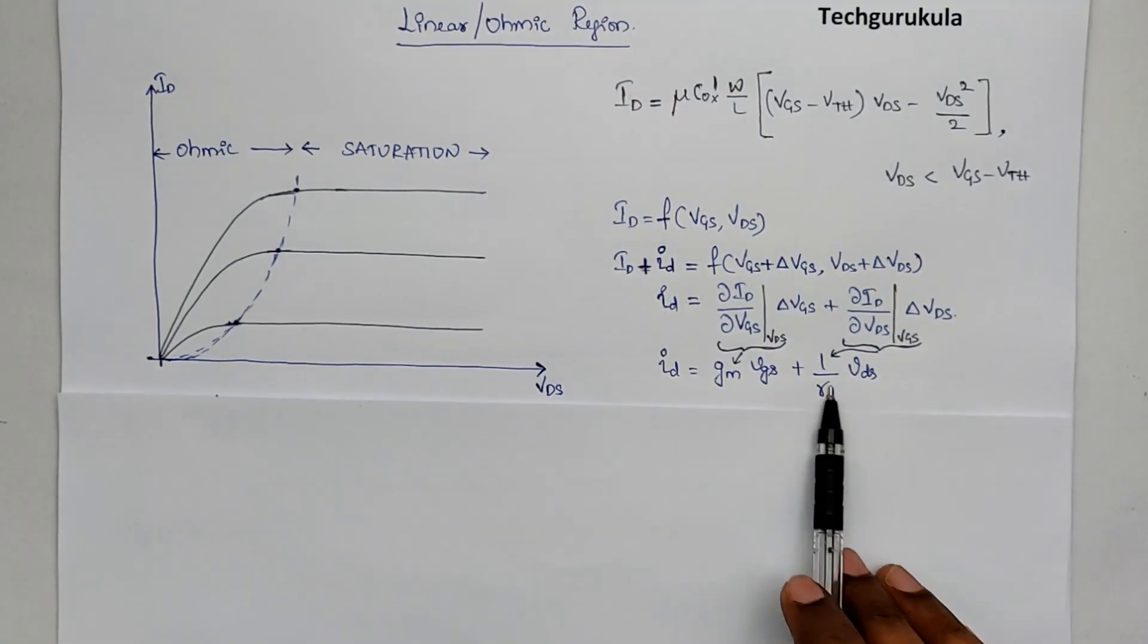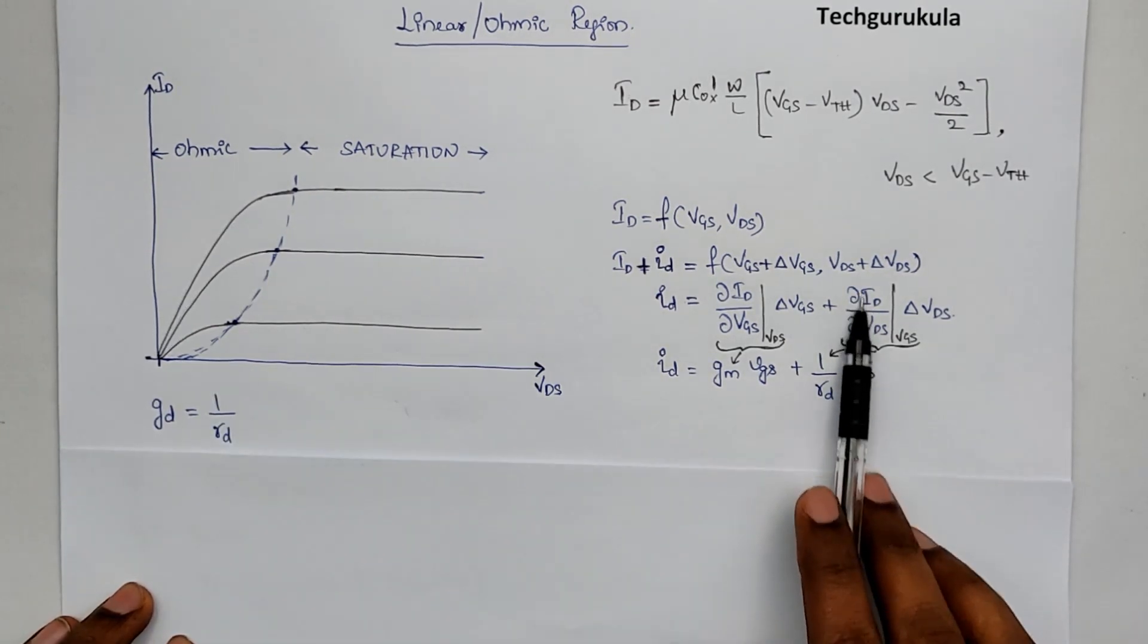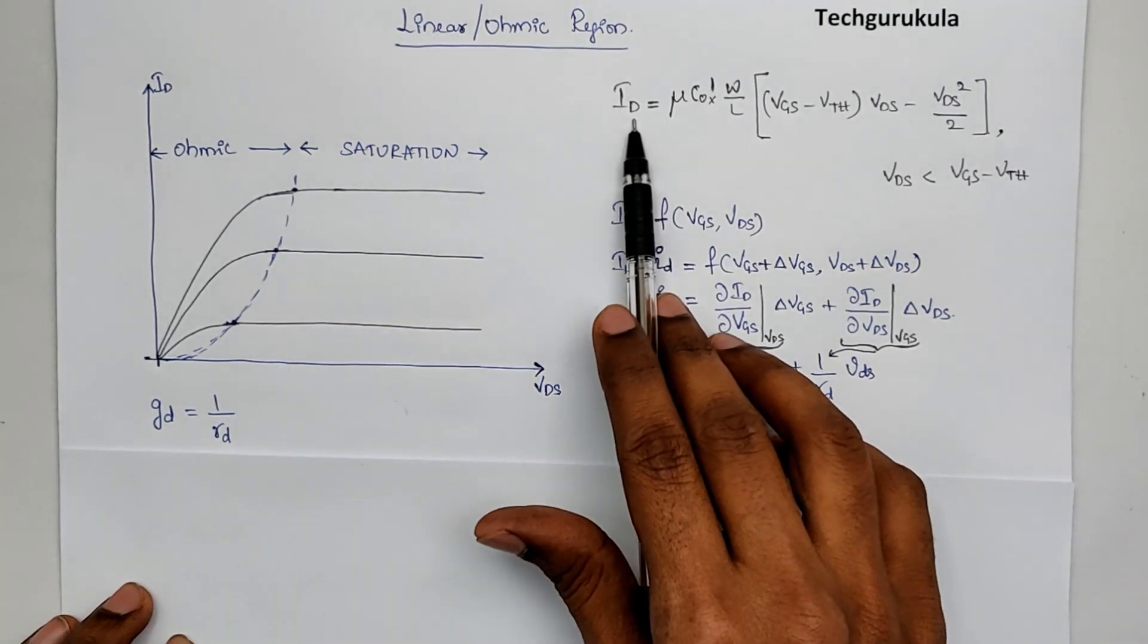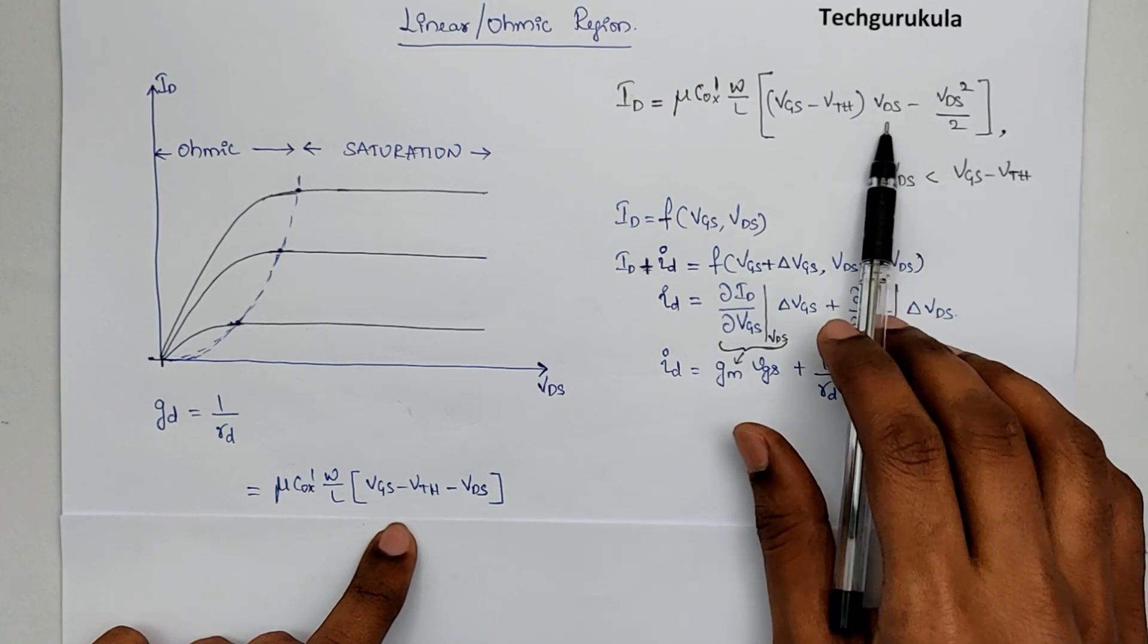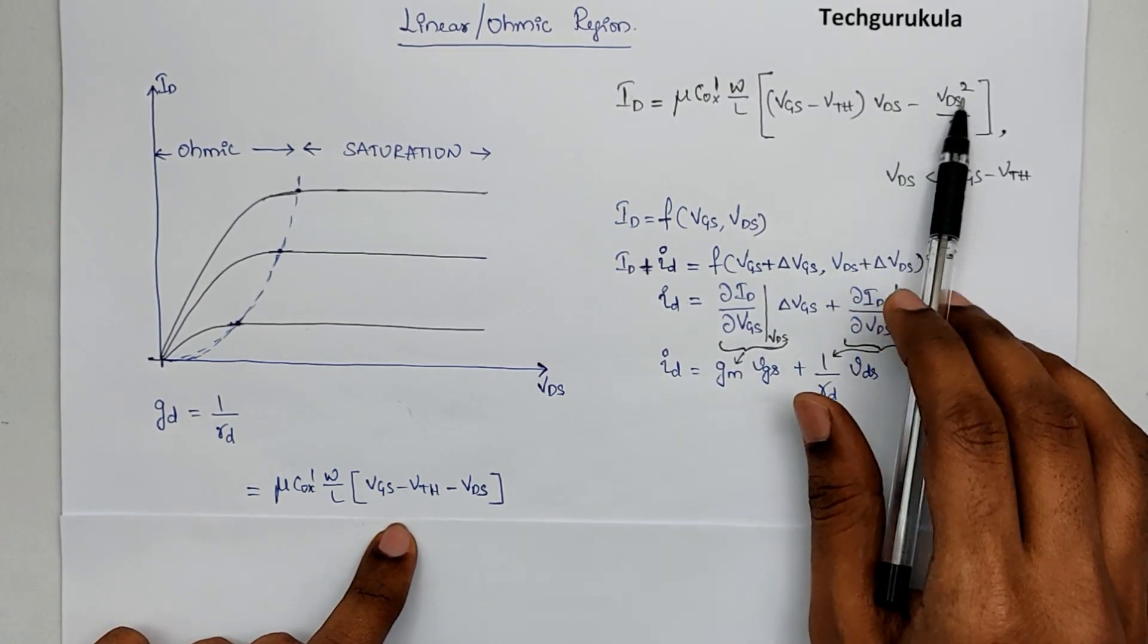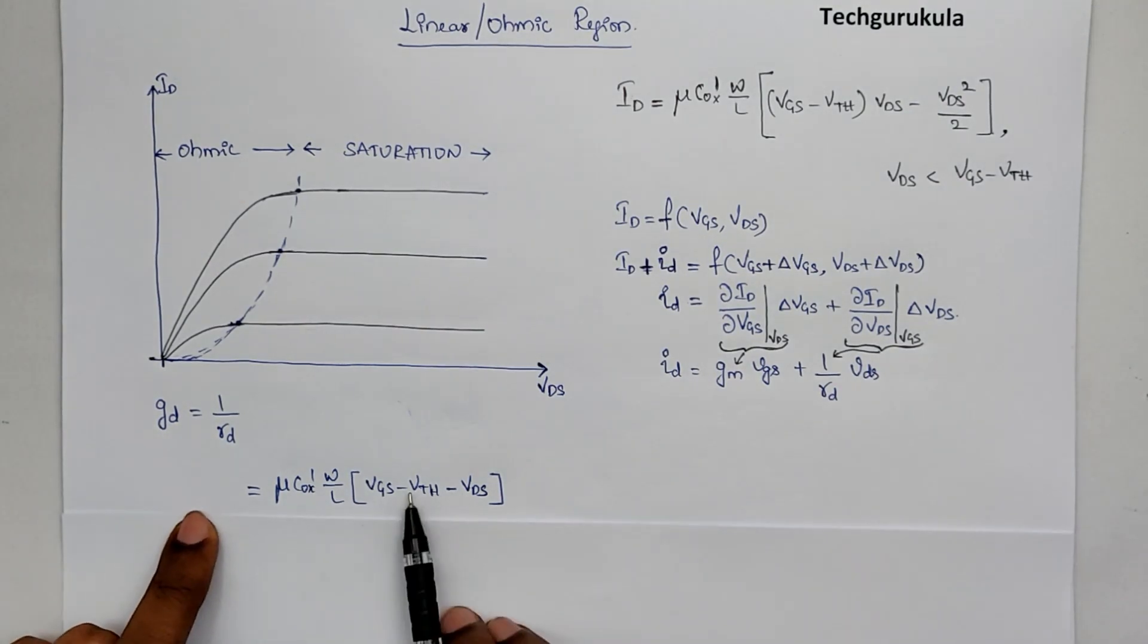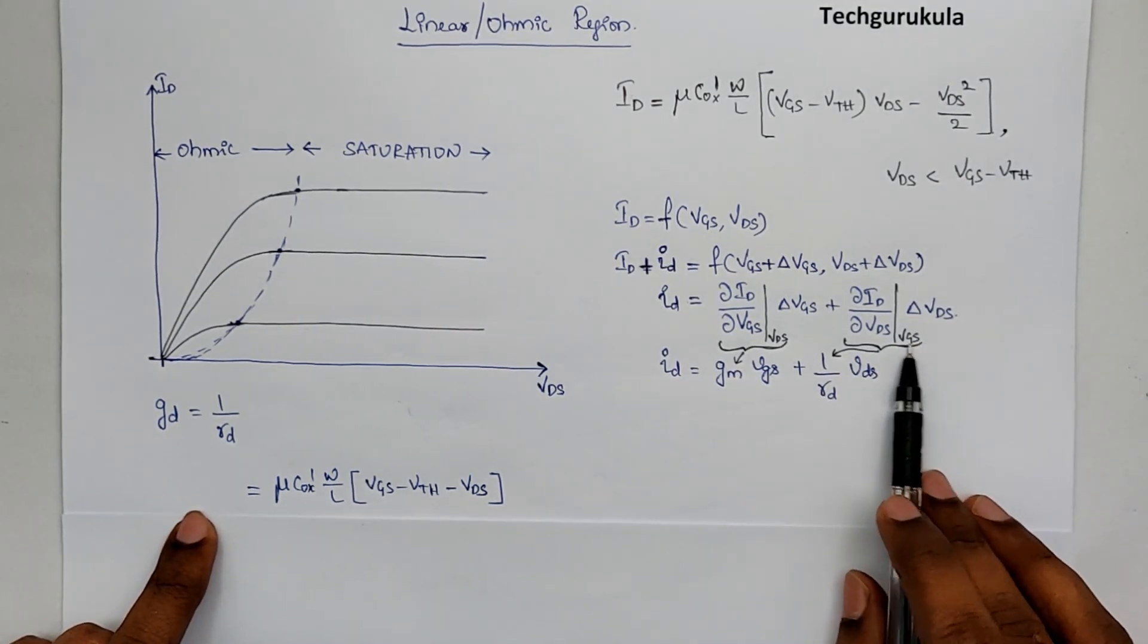Let's first investigate this term, which is 1 over RD, which is in fact the partial differentiation of ID with respect to VDS. So, if you look at ID, differentiated with respect to VDS, differentiation of this term VDS would be 1, differentiation. And this is 2 times VDS by 2 to cancel. So, we get this. And of course, GD is defined at a particular given VDS value.